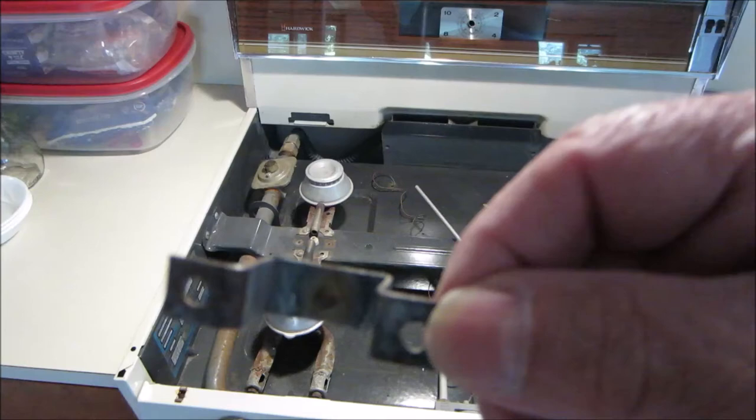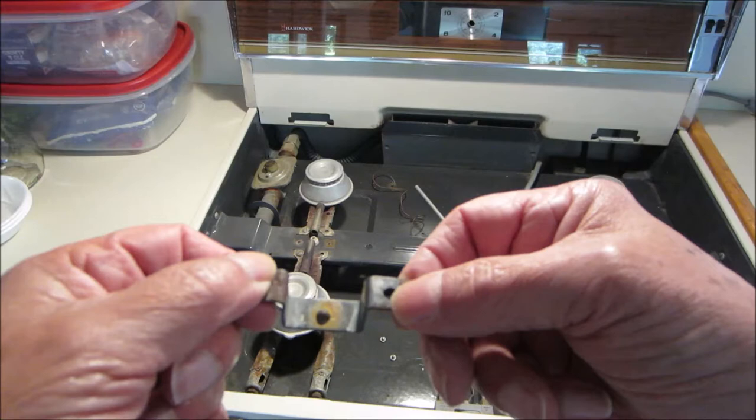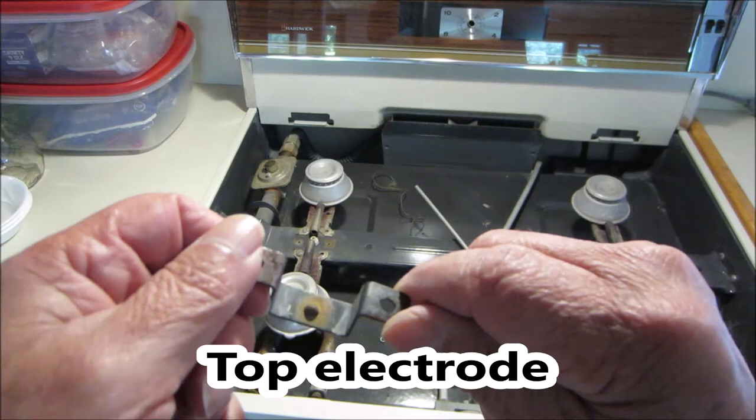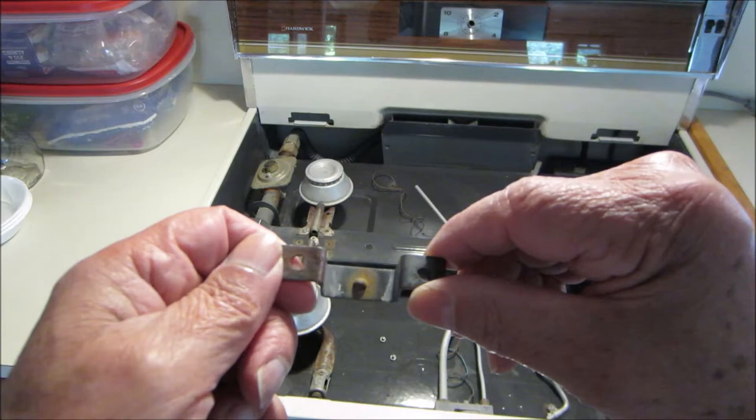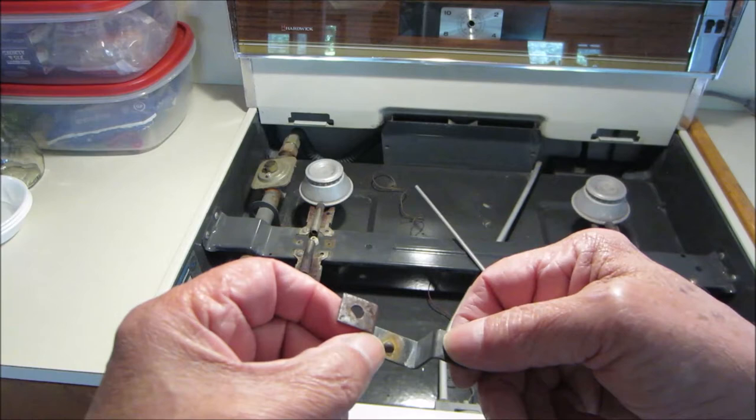This would be on a spark plug, this is called the side electrode. Well, on this stove for lack of a better term, I'll call it the top electrode. And we can see some rust here. So when this gets rusty in here or it gets all carbonized, it'll be black and carbonized, it will not spark.